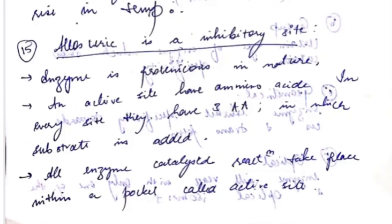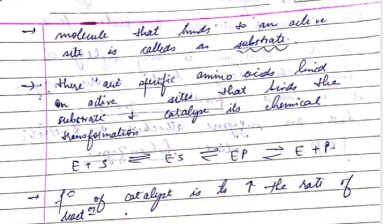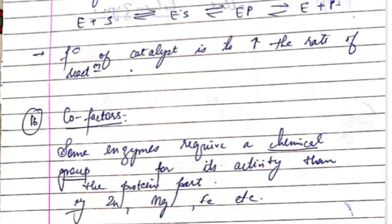All enzyme-catalyzed reactions take place within a pocket called the active site, and the molecule that binds to the active site is called the substrate. There are specific amino acids lining the active site that bind the substrate and catalyze its chemical transformation.